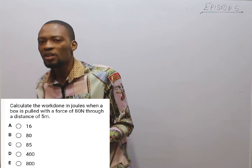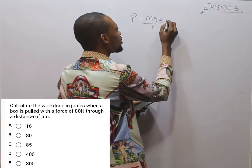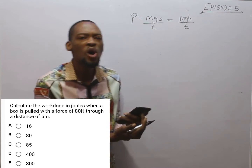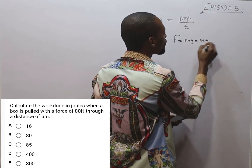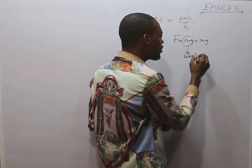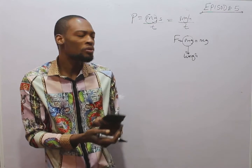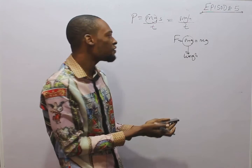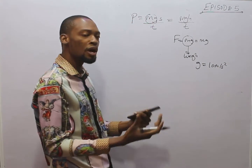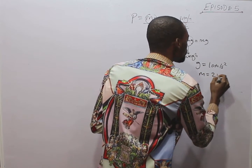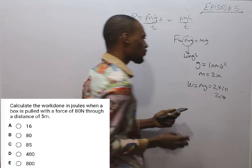In episode 4, we solved a question on power and we were told that power equals MGS over T, and also equals MGA over T. For MG, that is the weight of any body. Weight is mass times acceleration due to gravity. Mass is the quantity of matter a body possesses, but weight is the pull on a body. When you raise an object up, gravity begins to act on it — approximately 10 meters per second squared. So if an object has a mass of 2 kg, as you raise it up, weight equals MG, which is 2 times 10 — that is 20 Newtons. Force equals weight.